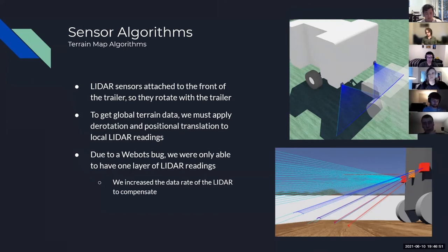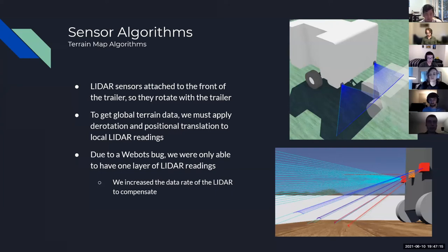The LiDAR gets data points in the local coordinate frame of the trailer. To generate an actual map, we must apply de-rotation and positional translation to these local LiDAR readings to stitch them together and form an actual terrain map. Due to a Webots bug, we were only able to have one layer of LiDAR readings per time step, so we increased the data rate of our LiDAR sensor to compensate and effectively make it act like it had multiple layers.